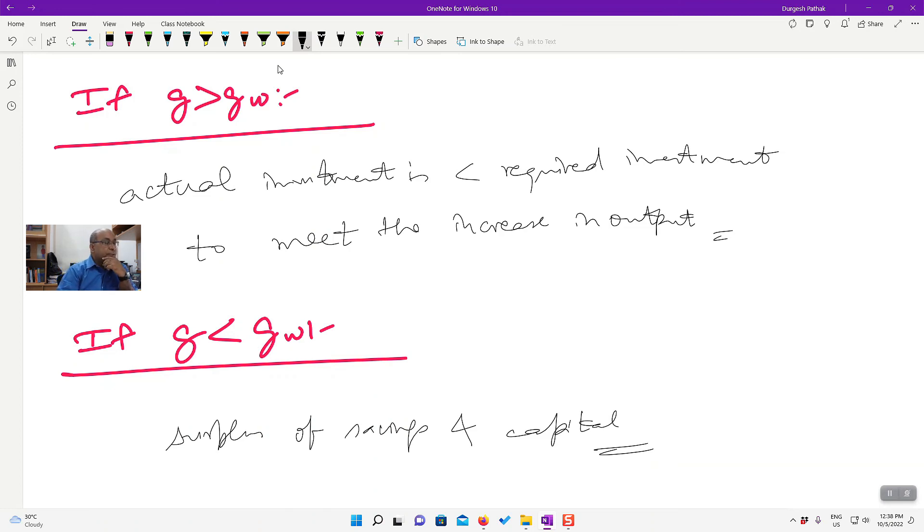Now see, the Harrod's model, unlike previous models, this equilibrium is actually called knife edge equilibrium. Because any deviation between G equals GW will be not self-correcting, it will actually keep on aggravating. So I give you a better example.